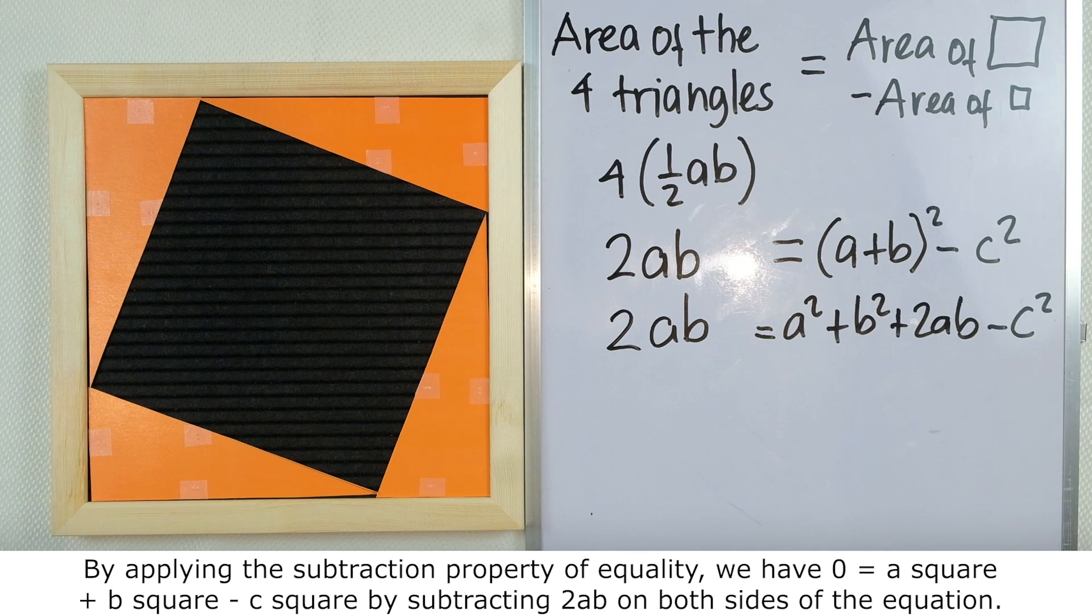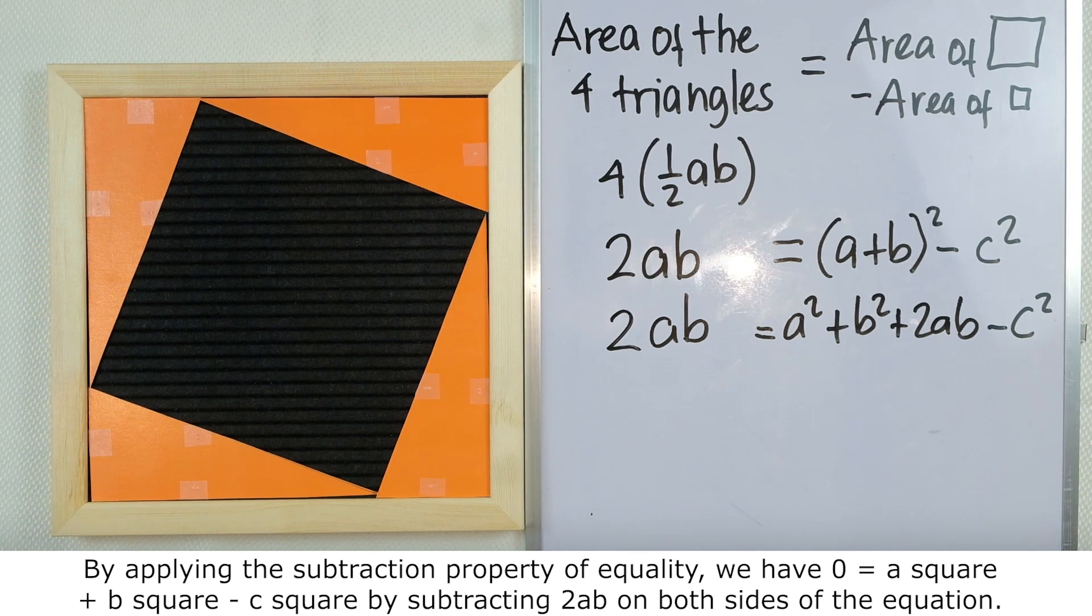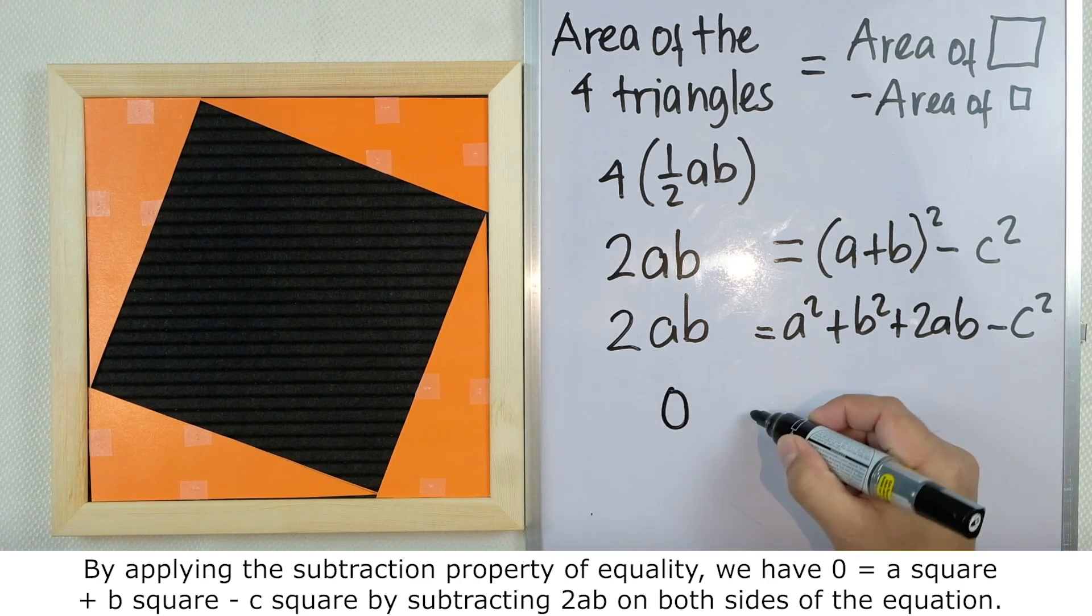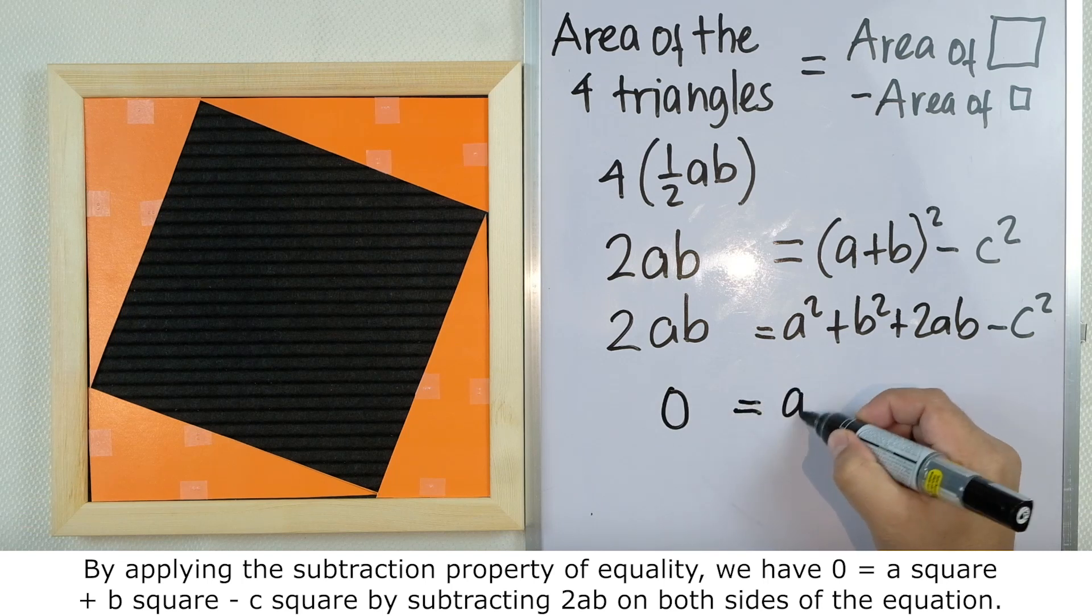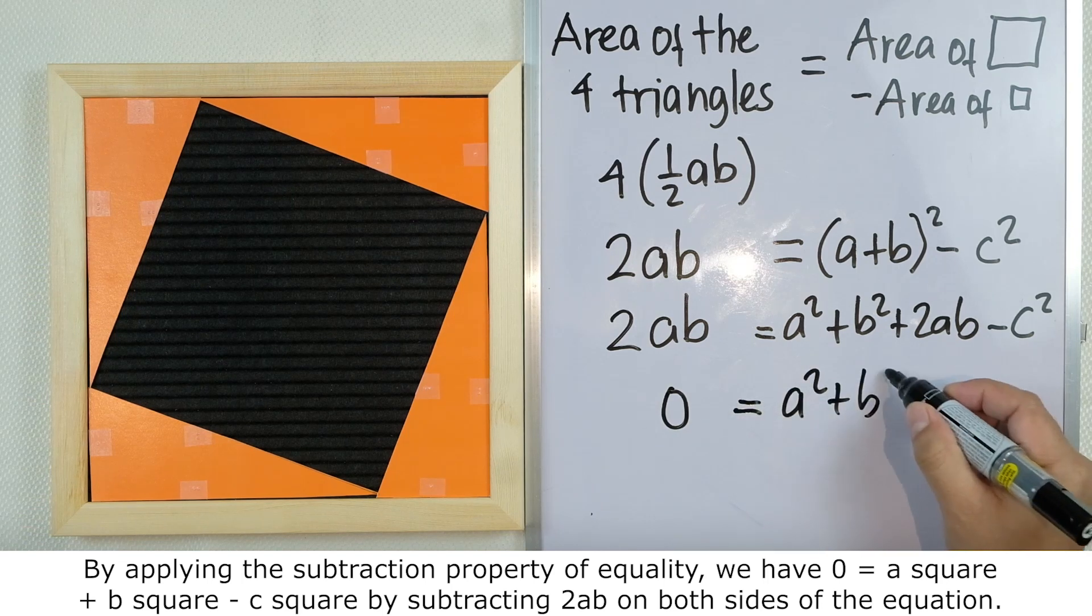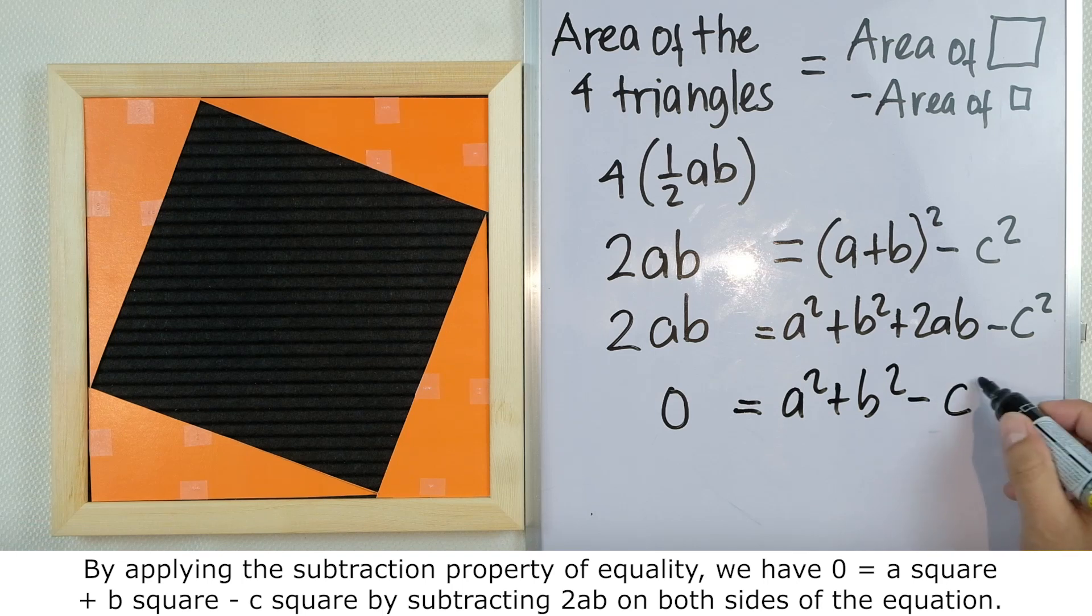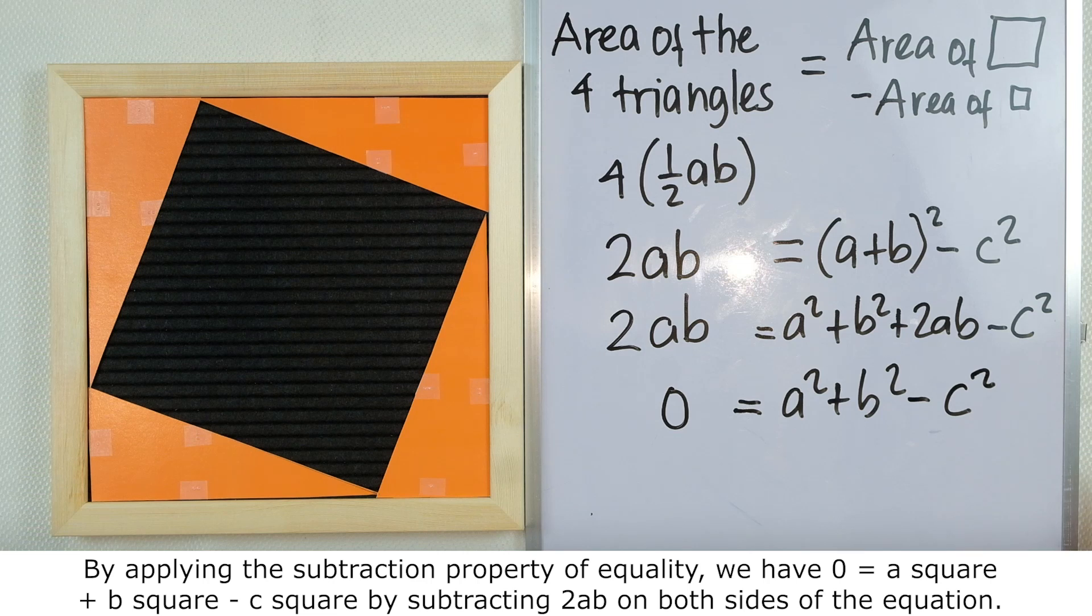By applying the subtraction property of equality, we have 0 = a² + b² - c². In this case, we subtract 2ab on both sides of the equation.